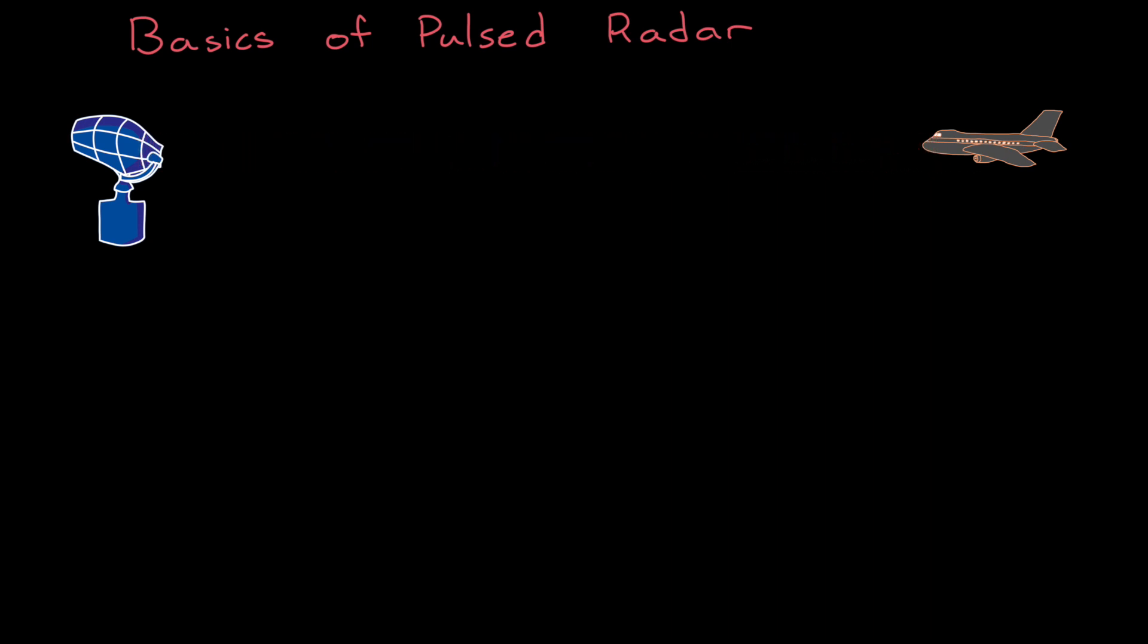However, many real pulsed radar systems don't send out a rectangular pulse. They modulate the frequency throughout the pulse. In the case of linear frequency modulation, or LFM, which I've drawn here, this waveform would sound more like a chirp.